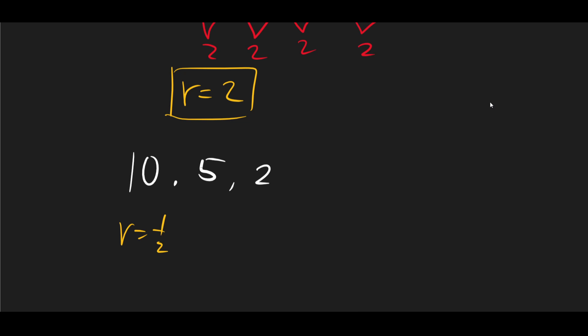And then 5 divided by 2, that's 2.5. So 2.5 divided by 2, that would be 1.25, and so on and so forth. So that's if our r is 1 half.